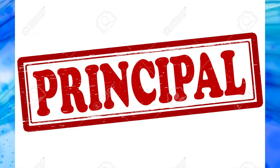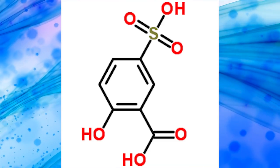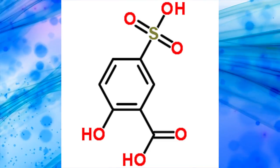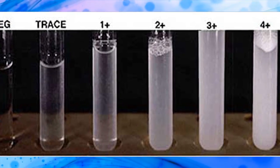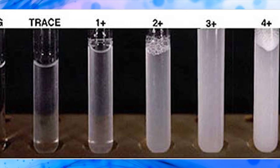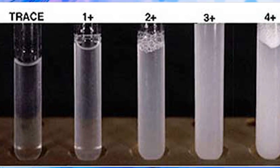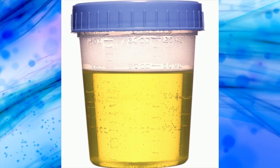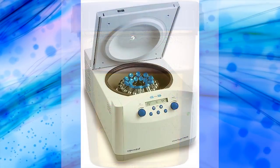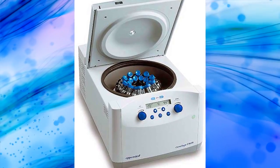Principle: proteins are precipitated by Sulphathiolic acid. Any resulting turbidity will give an estimation of the amount of protein present in the urine. If the urine sample contains cells and casts, these must be removed by centrifuging before carrying out the test.